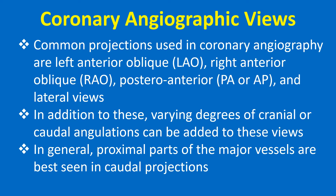Common projections used in coronary angiography are left anterior oblique (LAO), right anterior oblique (RAO), postero-anterior (PA), and lateral views. In addition to these, varying degrees of cranial or caudal angulations can be added. In general, proximal parts of major vessels are best seen in caudal projections.